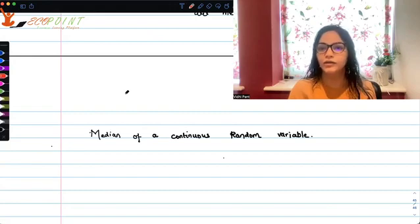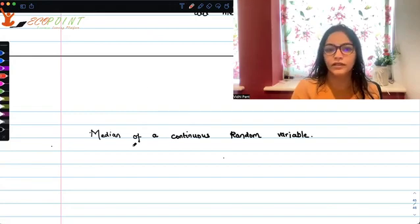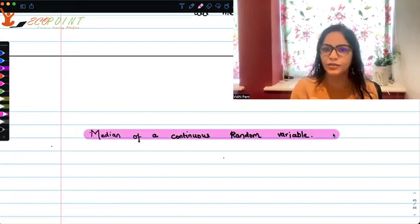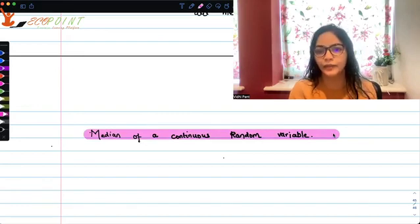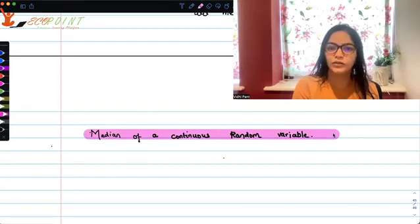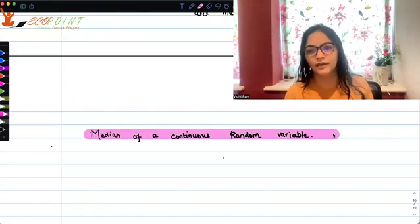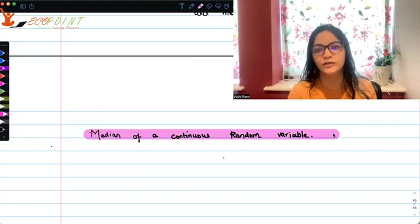And today I'm going to talk about the median of a continuous random variable. So what is median of a continuous random variable? It is that value of x, prior to which there is a 50% chance of any x falling. And post that value, there's a 50% chance of any value of x falling.